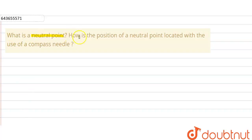So the question is: what is a neutral point, and how is the position of a neutral point located with the use of a compass needle?